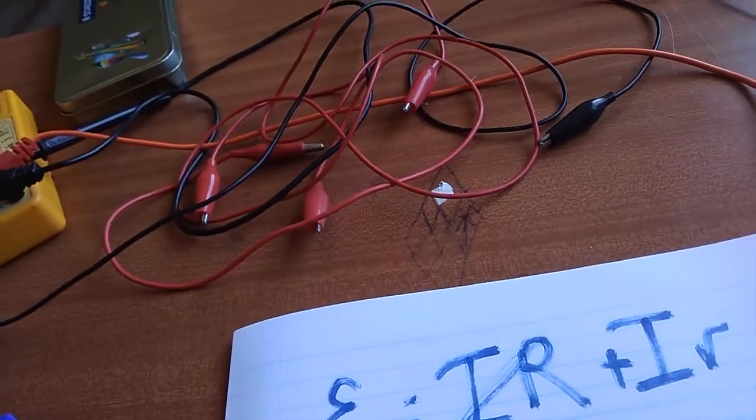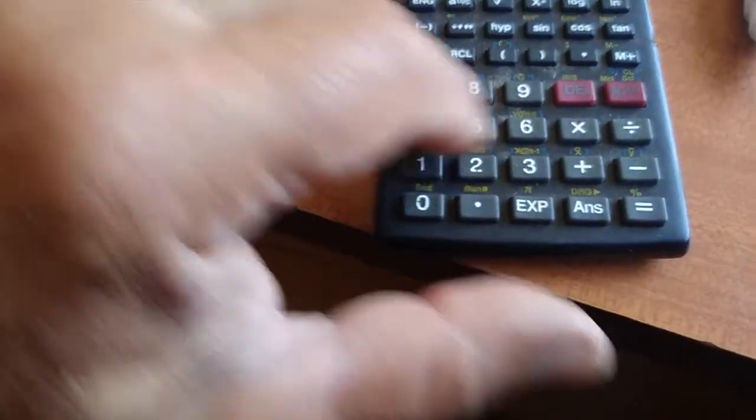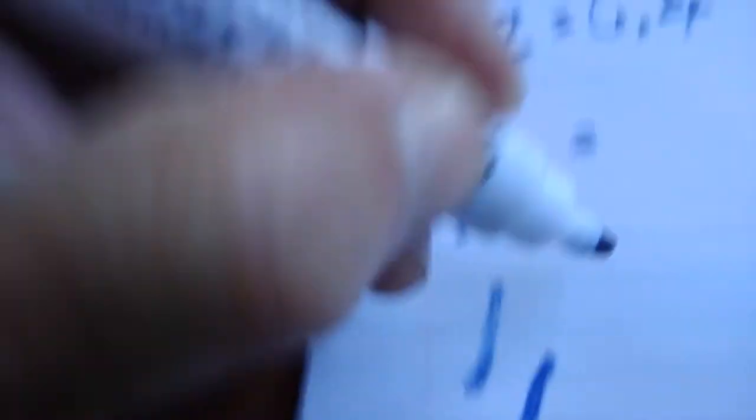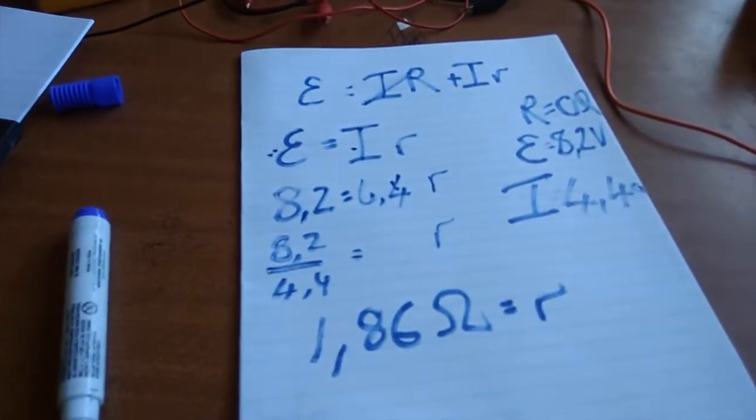Okay, so we plug our values in. 8.2 equals, when resistance is 0, 4.4 R. So R becomes 8.2 divided by 4.4. Reach for the trusty calculator. 8.2 divided by 4.4 equals 1.86. 1.86 ohms is the internal resistance of that cell there.